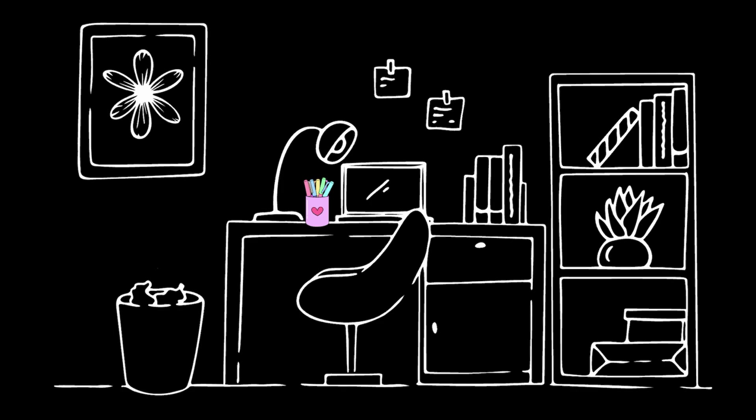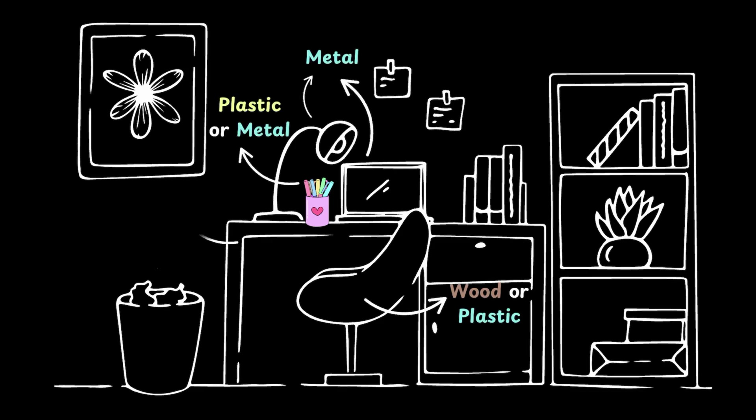Look around your study room. That chair is probably made of wood or plastic. The table lamp could be metal or even cloth covered. Your laptop or phone – a part of it is definitely metallic. And your pencil stand could be anything: metal, plastic. Your desk is probably made of wood. All these things are made of different materials. But why?